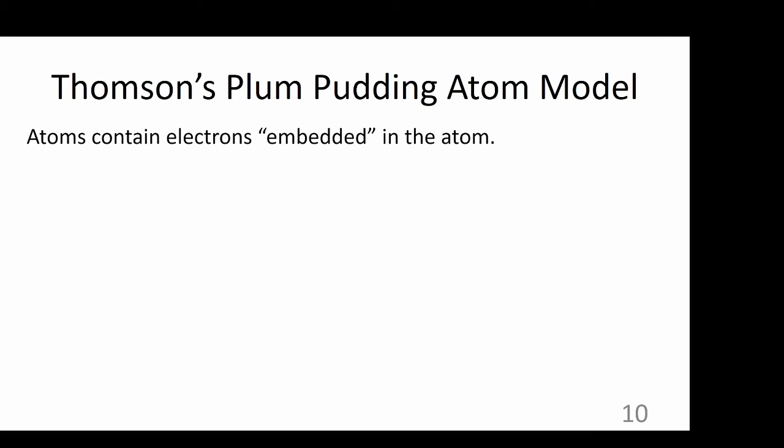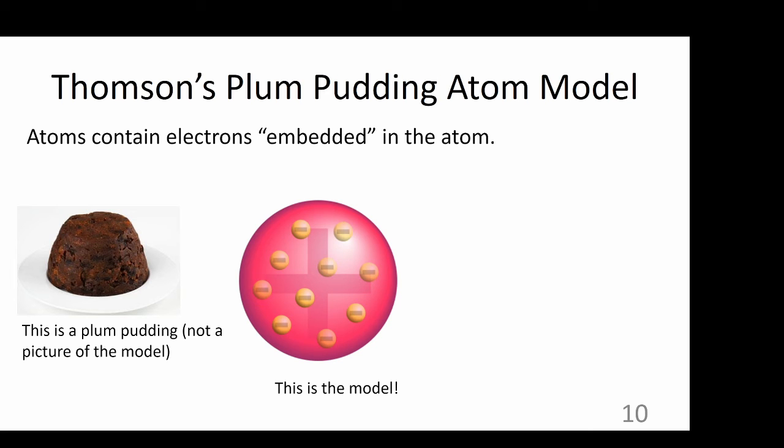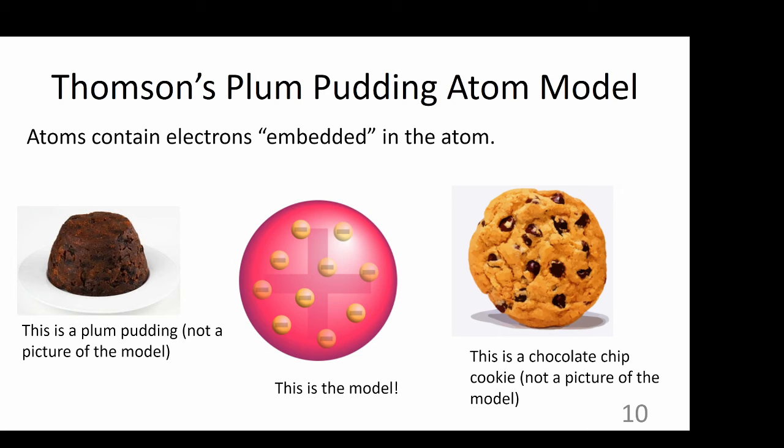Thompson's discovery suggested that Dalton's model of the atom, the billiard ball model, needed to be changed. Rather than being an indivisible particle, the atom must contain electrons that can be emitted. Since electrons were found to be negatively charged, and atoms are neutral, the rest of the atom must be positively charged. Thus Thompson's model of the atom included a positively charged mass with electrons embedded in the atom, similar to the way that raisins are embedded within plum pudding. I don't particularly like plum pudding, so I think of it more as a chocolate chip cookie dough kind of model.